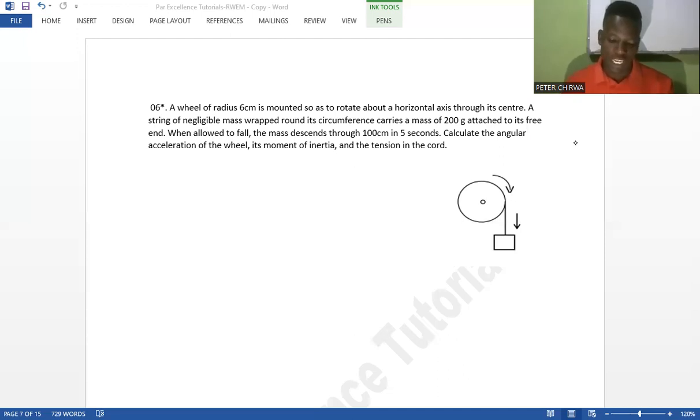Question: A wheel of radius 6 meters is mounted so as to rotate about a horizontal axis through its center. A string of negligible mass wrapped around its circumference carries a mass of 200 grams attached to its free end. When allowed to fall, the mass descends 200 centimeters in 5 seconds. Calculate the angular acceleration of the wheel, its moment of inertia, and the tension.